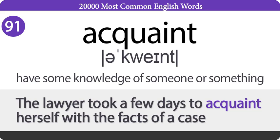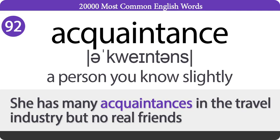Acquaint: Have some knowledge of someone or something. The lawyer took a few days to acquaint herself with the facts of her case. Acquaintance: A person you know slightly. She has many acquaintances in the travel industry but no real friends.